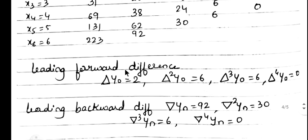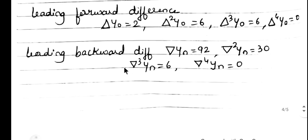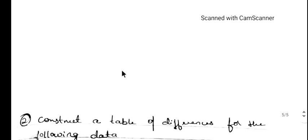This is how we complete the first example. First, the equation is given; we substitute x values to get y. Then form the first, second, and third differences until the last column is a single value or becomes 0. Then write the leading forward difference and backward difference.